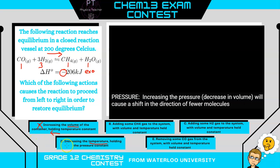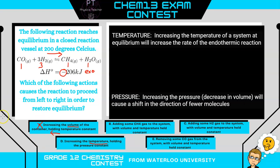Let's go down to D — increasing the temperature. Le Chatelier's principle says increasing the temperature of a system at equilibrium will increase the rate of the endothermic reaction. Since this reaction from left to right is exothermic, the endothermic reaction would be in the direction from right to left. So again, we are not interested in that either.